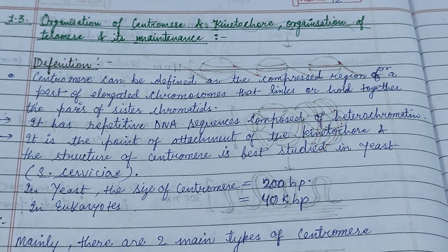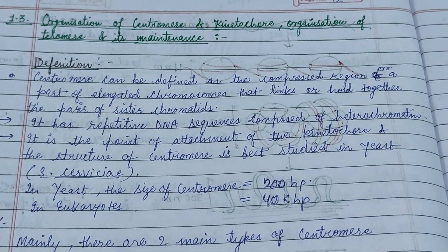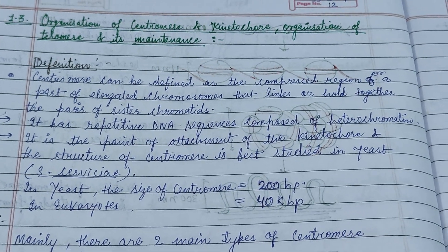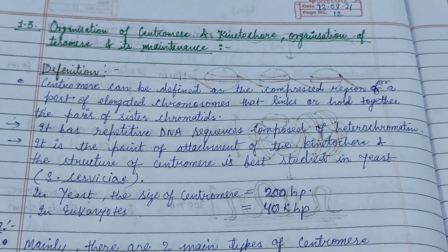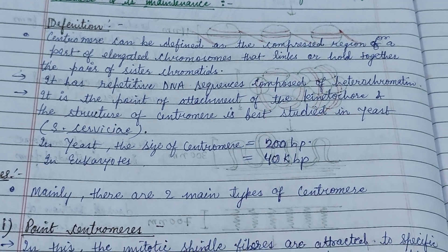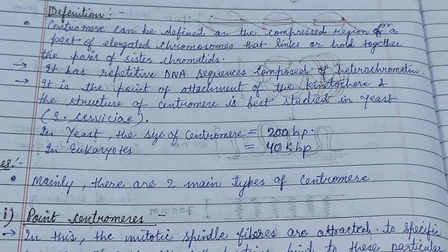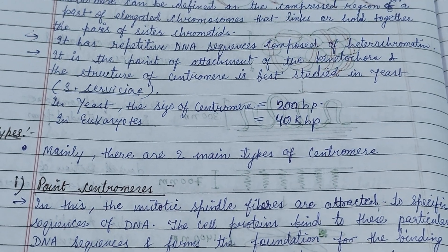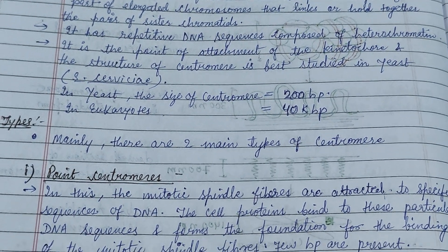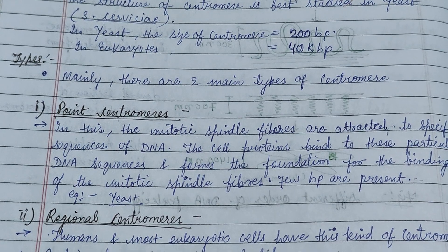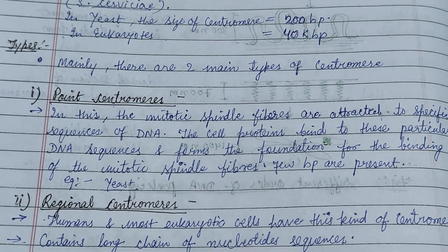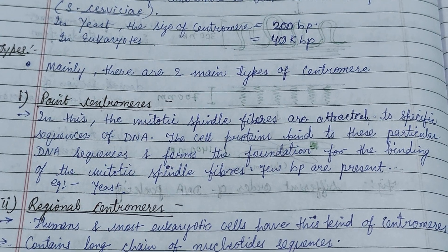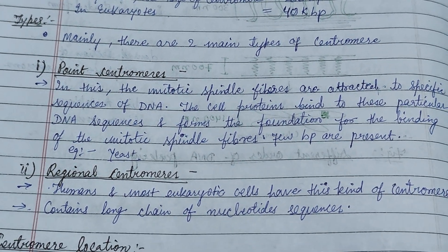This video is about the organization of the centromere and the kinetochore, organization of the telomere and its maintenance. The centromere can be defined as a compressed region or part of an elongated chromosome that links or holds together a pair of sister chromatids. In yeast, the size of the centromere is 200 base pairs, while in eukaryotes it is 40 kilobase pairs.